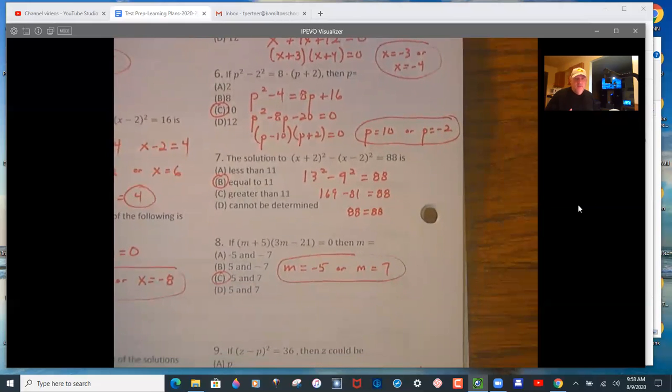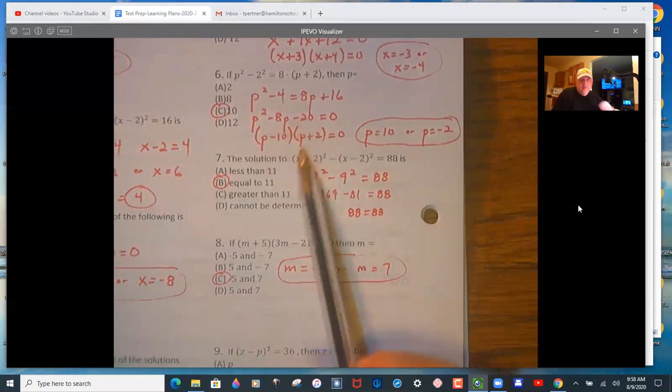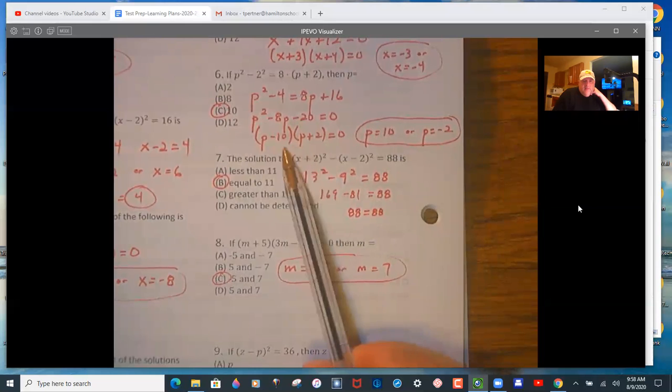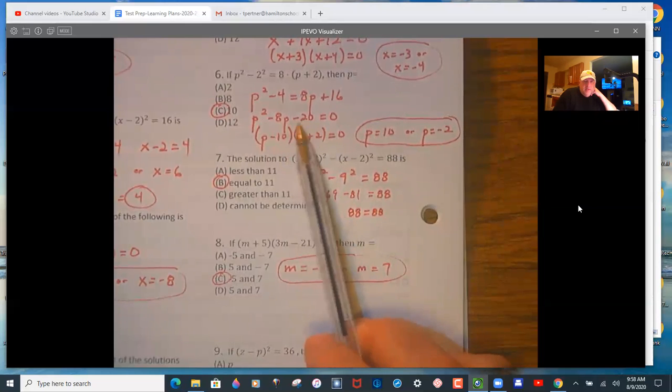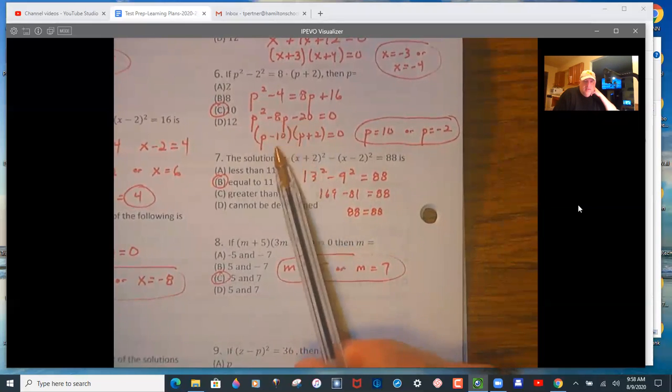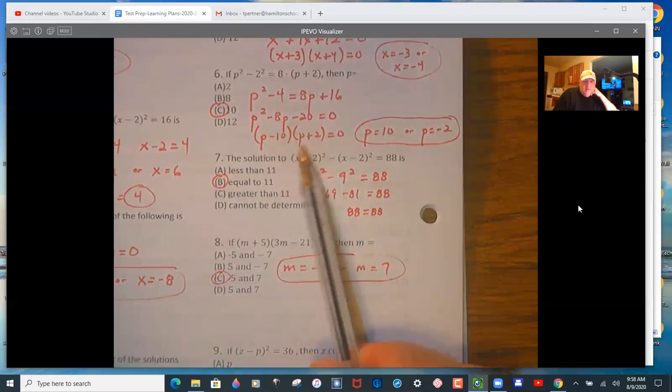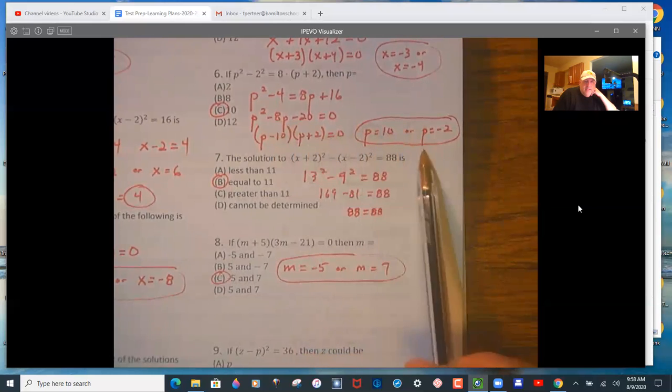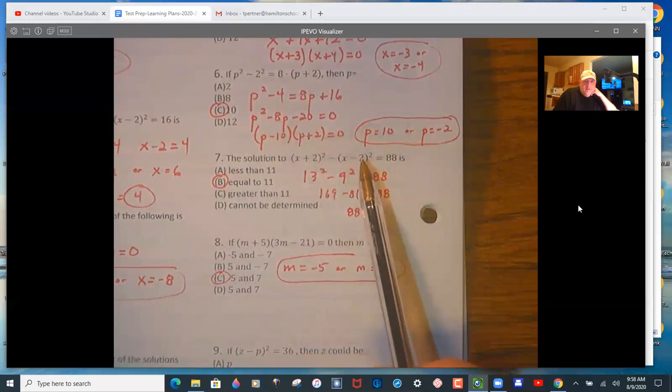Number 6, so you want to simplify, take everything to one side, and same idea, factor it. Two numbers that multiply to negative 20 and add to negative 8. Negative 10 and 2, then set them equal to 0, and you get 10 and negative 2. So 10 is the one that's given.